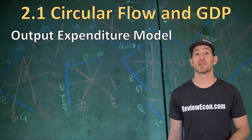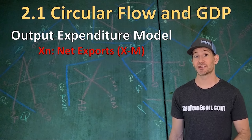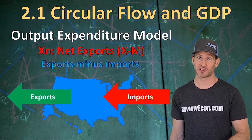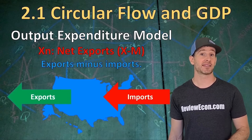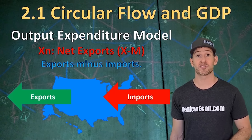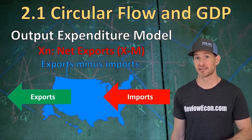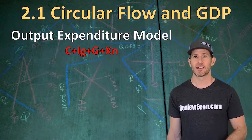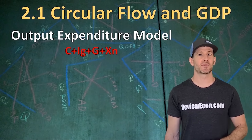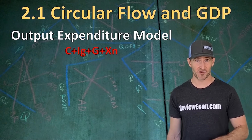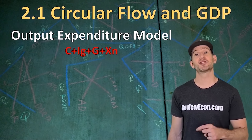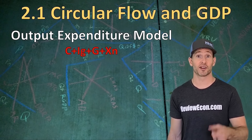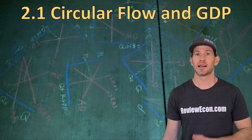The last variable is net exports, X sub N: exports minus imports — the things foreign countries buy from us minus the things we buy from them. Make sure you keep this formula in mind as you move throughout this class. It shows up on exams over and over, even in future units.